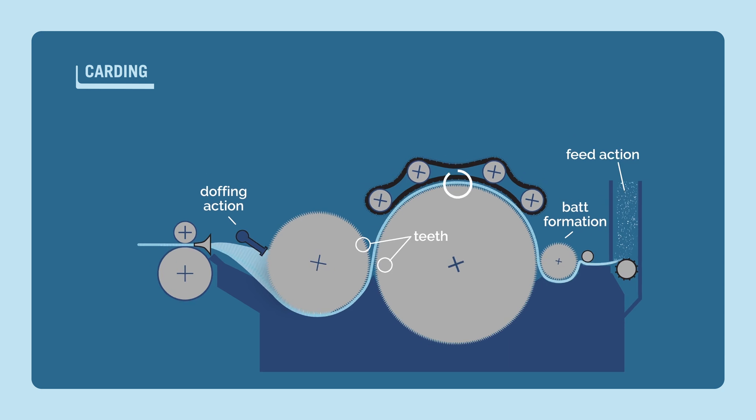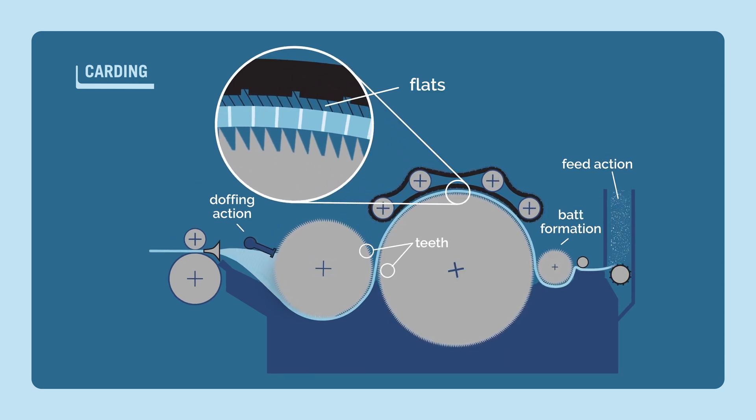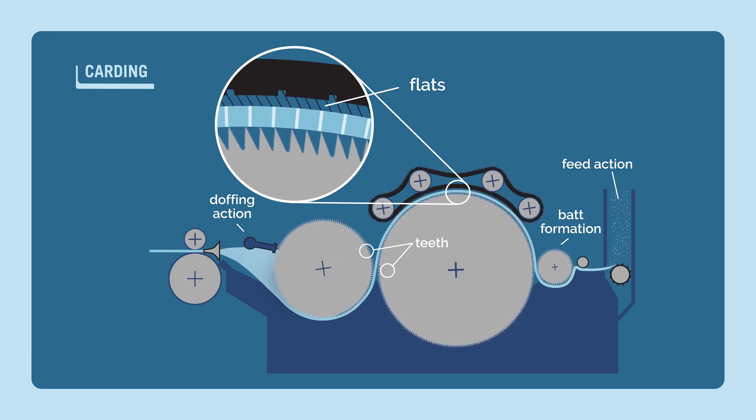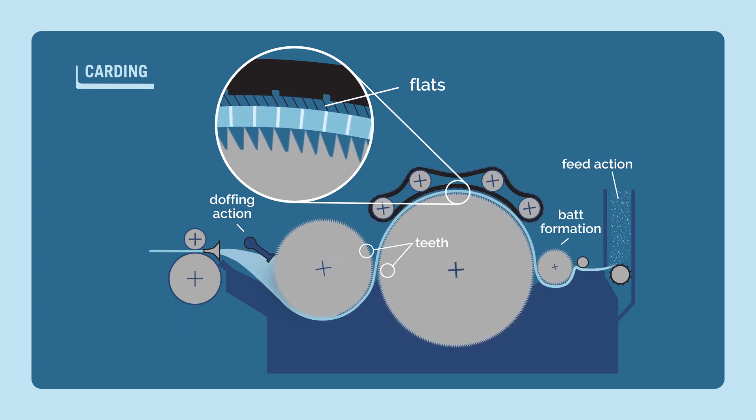There are also wire covered surfaces called flats that come in close proximity to the main cylinder. This is the area where most of the carding action takes place. The wire wound cylinders acting against one another in conjunction with the flats are the actions that accomplish carding's main purpose.